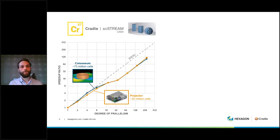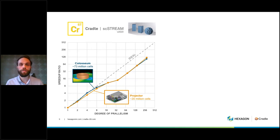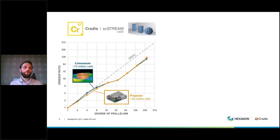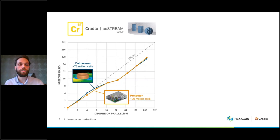Speaking about the cloud, we have a great story for HPC. CFD in general scales very well on these platforms because it has great potential for parallelization. SC Stream has a near-linear speedup ratio. On the graph, the x-axis shows the degree of parallelism — the number of cores — and the speedup ratio shows how much faster the simulation runs as cores are added. In a perfect world, doubling cores would halve the solve time. Here we see near-linear parallelization for SC Stream.